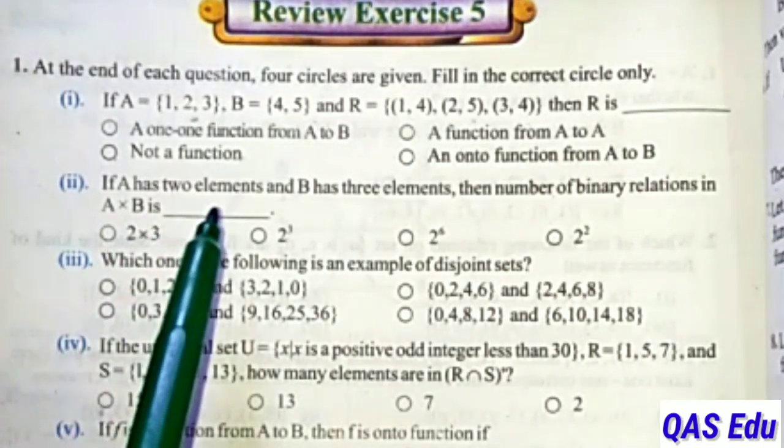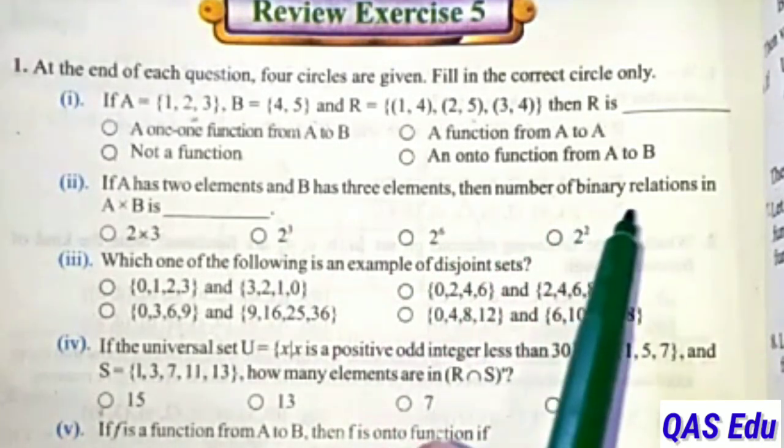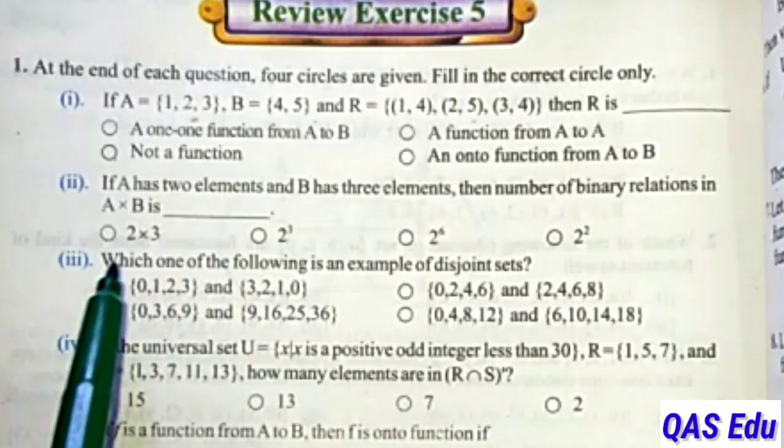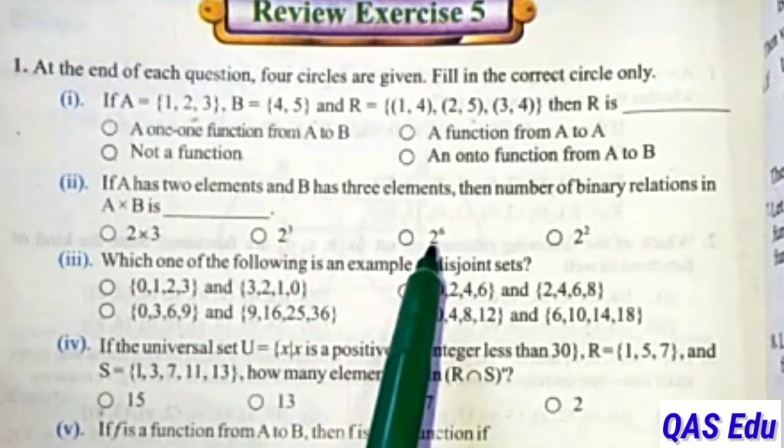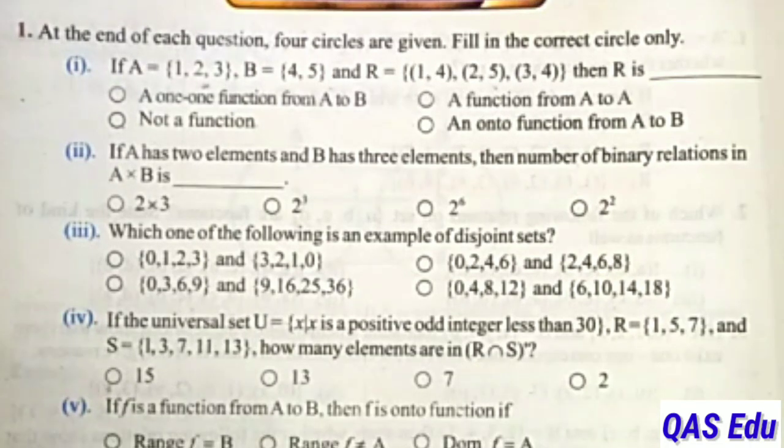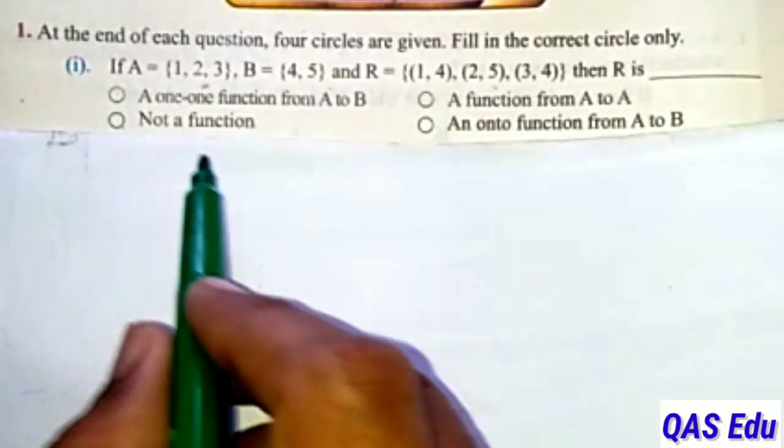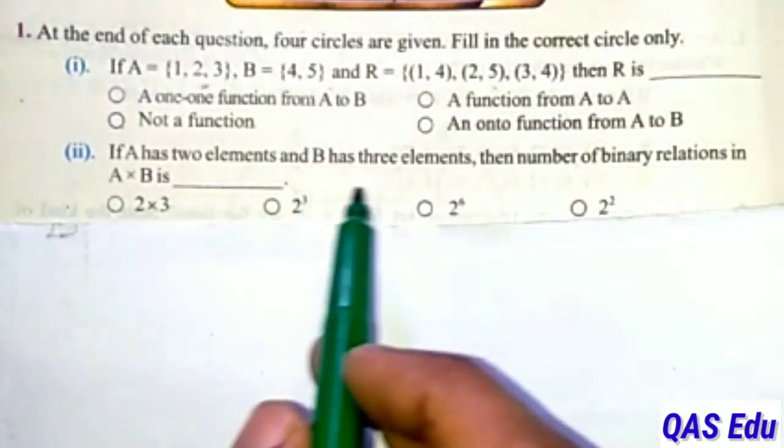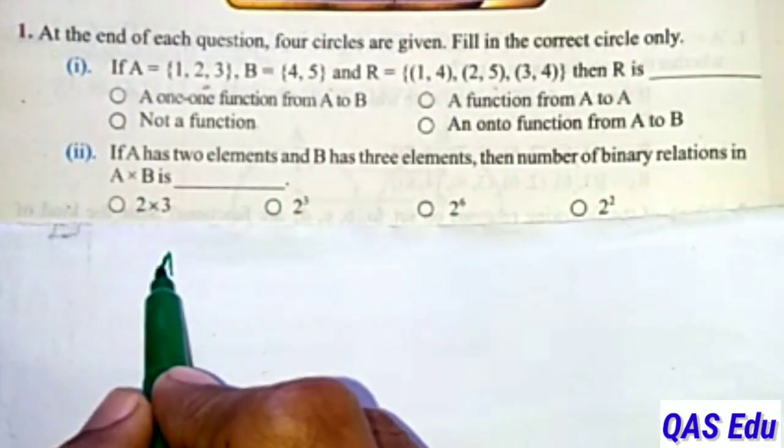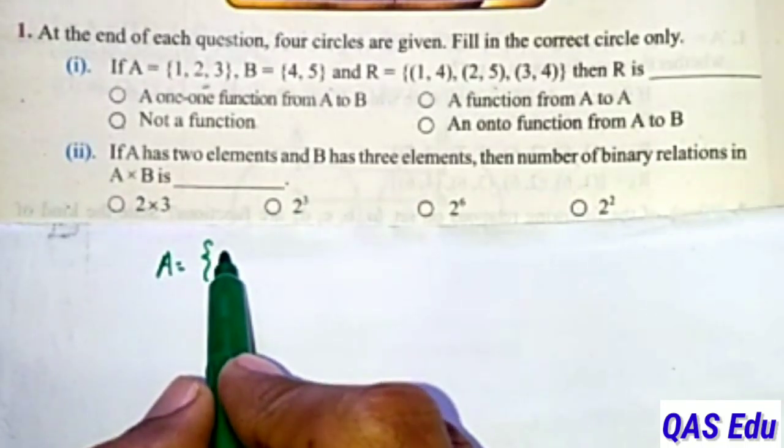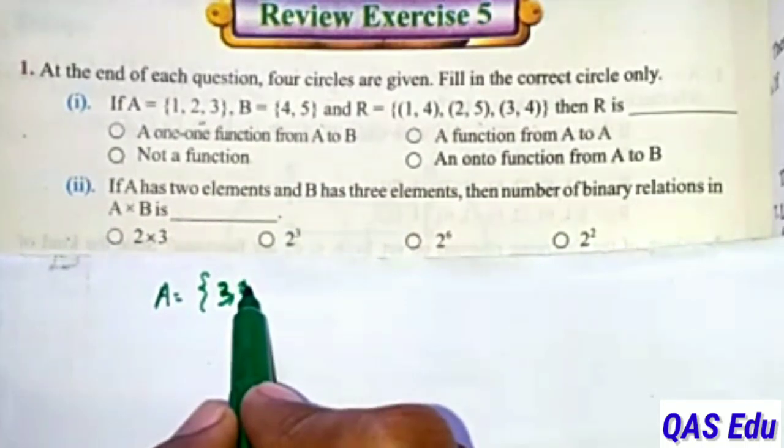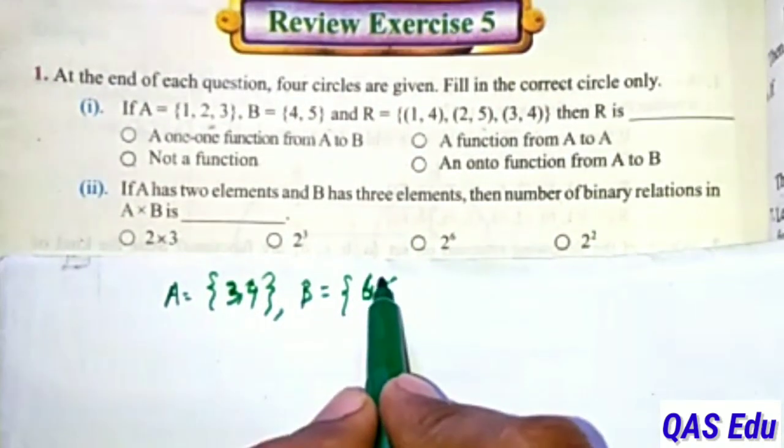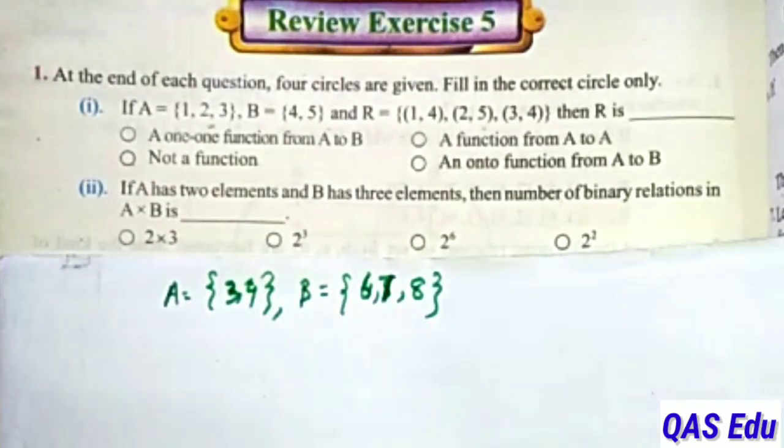Number 2: If A has 2 elements and B has 3 elements, then number of binary relations in A cross B is: 2×3, 2^3, 2^6, 2^2. Binary relations join two sets. Suppose A consists of 2 elements, let's say {3, 4}. And B has 3 elements: {6, 7, 8}.